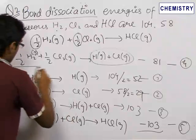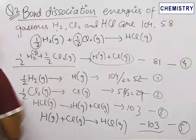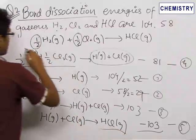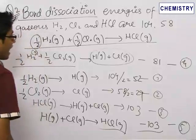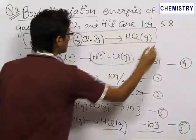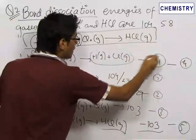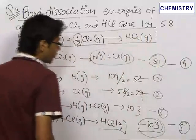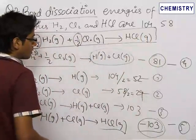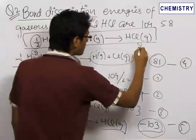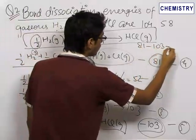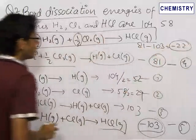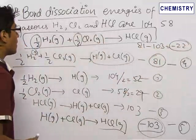What we get is ½H₂(g) + ½Cl₂(g) → HCl(g), which is the desired equation. The enthalpy of formation equals the sum of the enthalpies of equations four and five: 81 + (−103) = −22 kcal/mol.